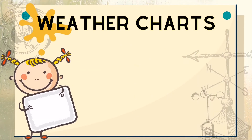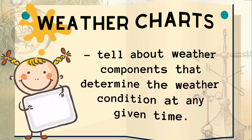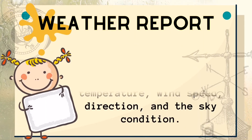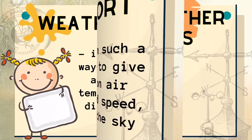Let's define weather charts. Weather charts tell about weather components that determine the weather condition at any given time. A weather report is important in that it provides accurate data on air temperature, wind speed, direction, and sky condition.